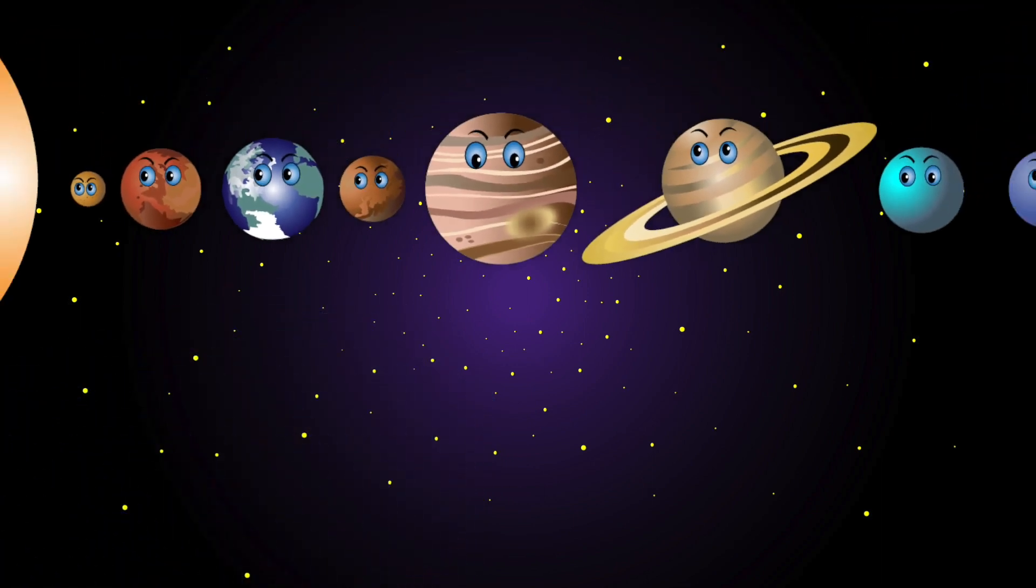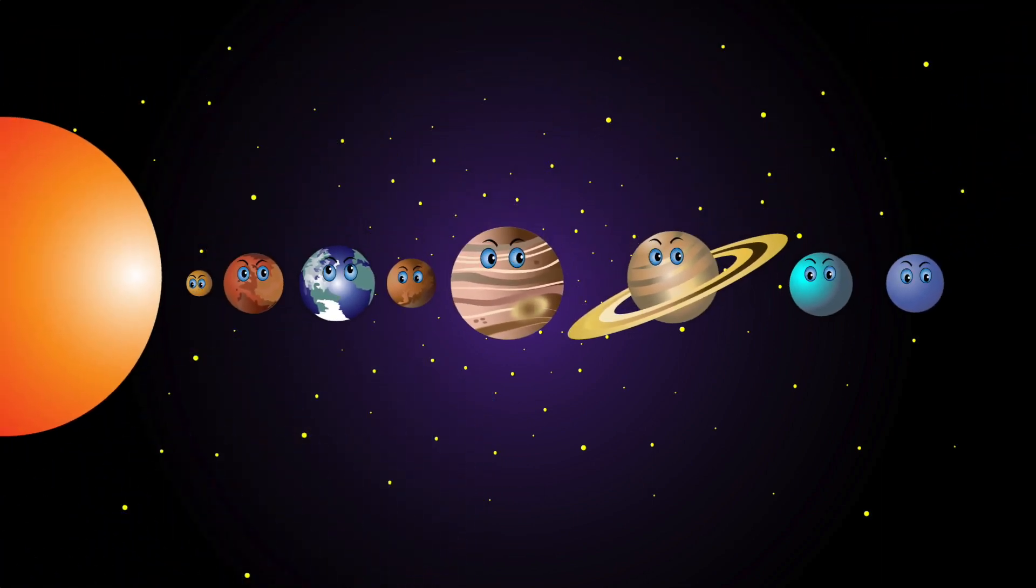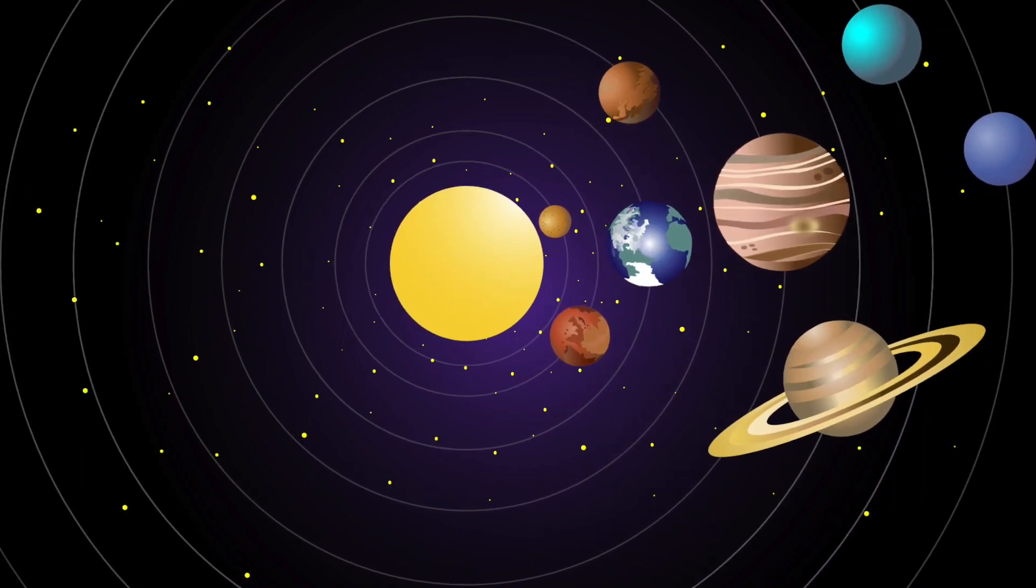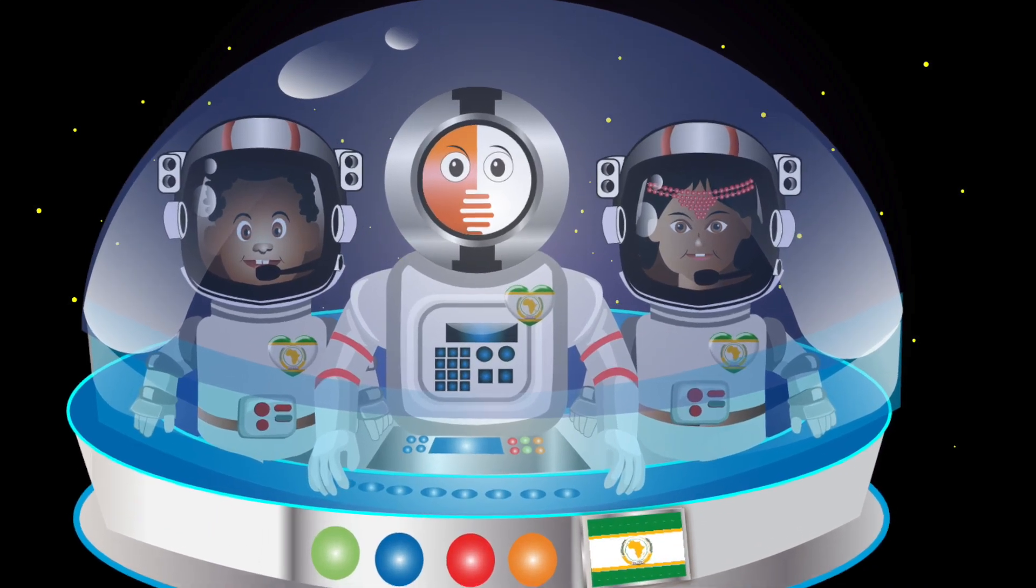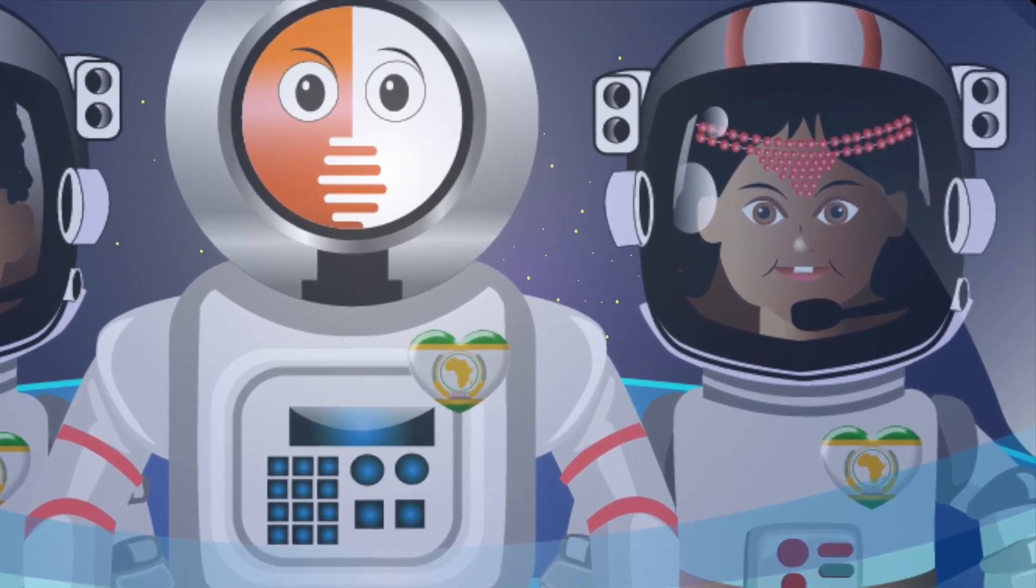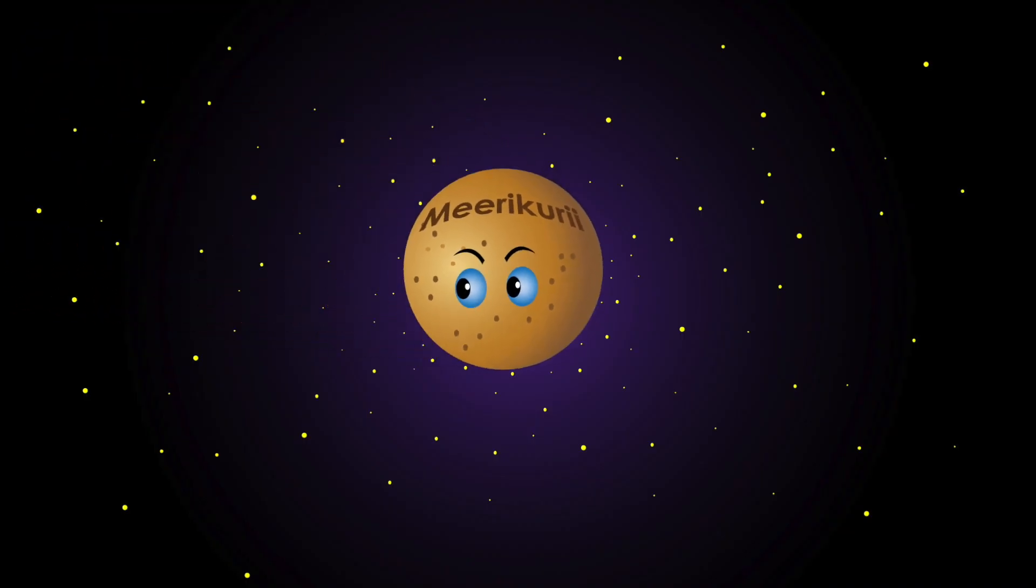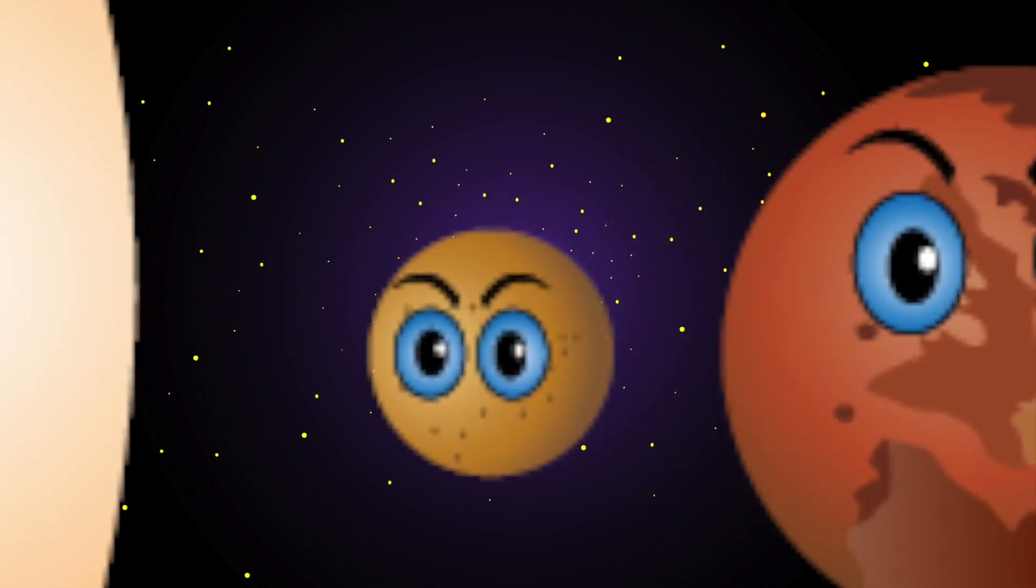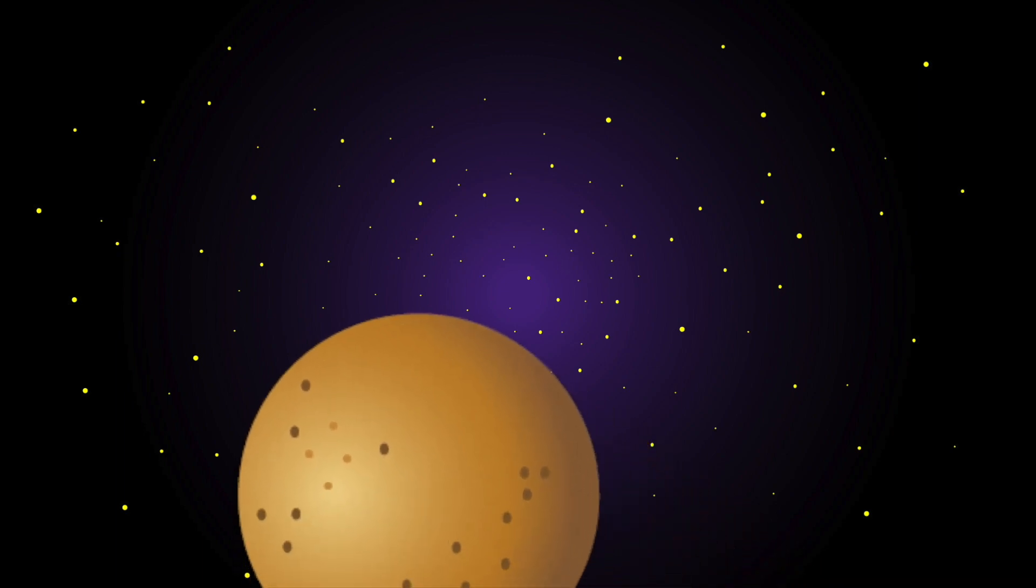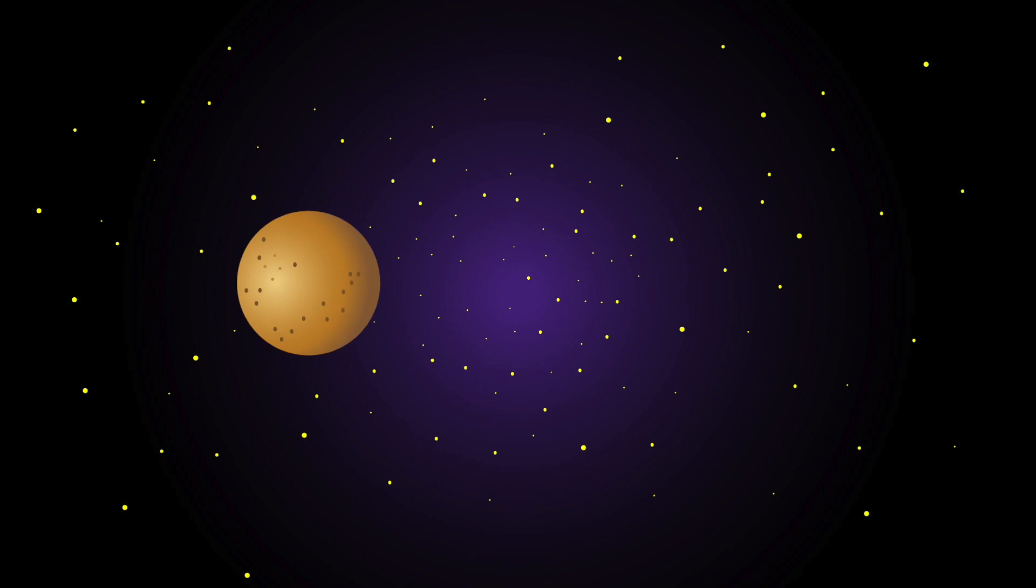There are eight planets in our solar system. We revolve around the sun. Join us to learn about the different planets. Now sing along and have some fun. My name is Mercury. I'm the second hottest planet, the closest one to the sun. A year on my surface is 88 days. I'm the smallest but I'm lots of fun.